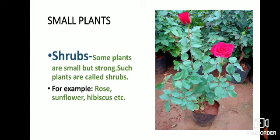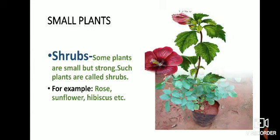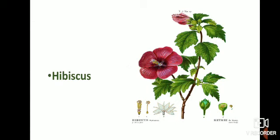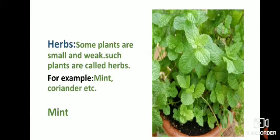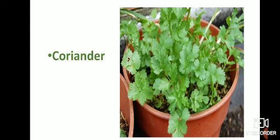Small plants — Shrubs: Some plants are small but strong. Such plants are called shrubs. For example, Rose and Hibiscus. Herbs: Students, some plants are small and weak. Such plants are called herbs. For example, mint — that is the picture of mint — and coriander.